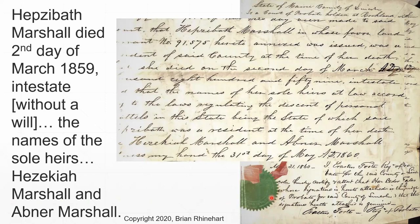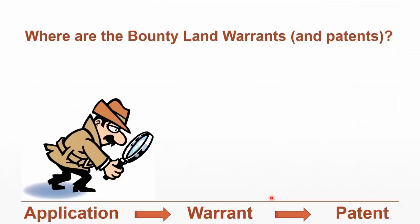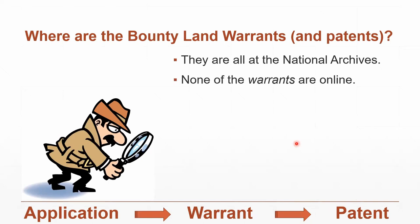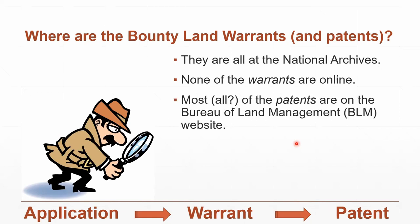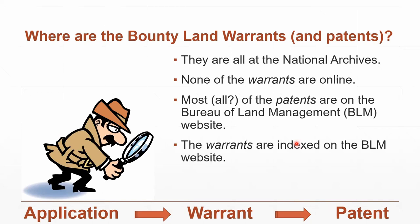Where do you find the bounty land warrants and patents? The originals are at the National Archives. The warrant certificates themselves are not online — you'll need to get those from the National Archives. If you're looking for the patents, most if not all of them have been scanned onto the Bureau of Land Management website, and the warrants themselves are indexed on that website as well. So you can get the index for the warrants and see who redeemed the patent on that site.